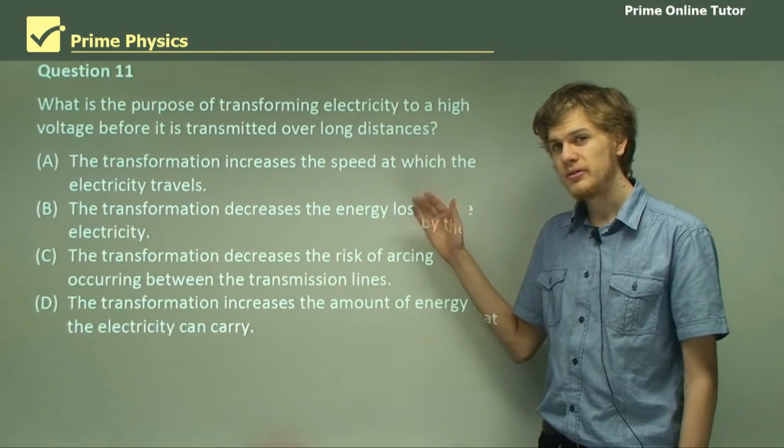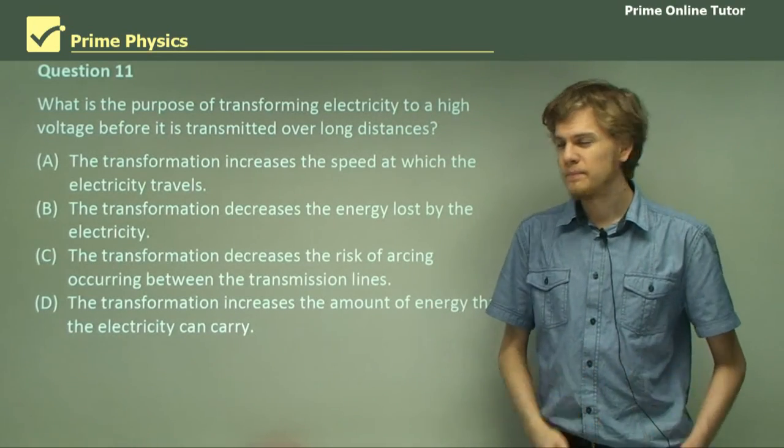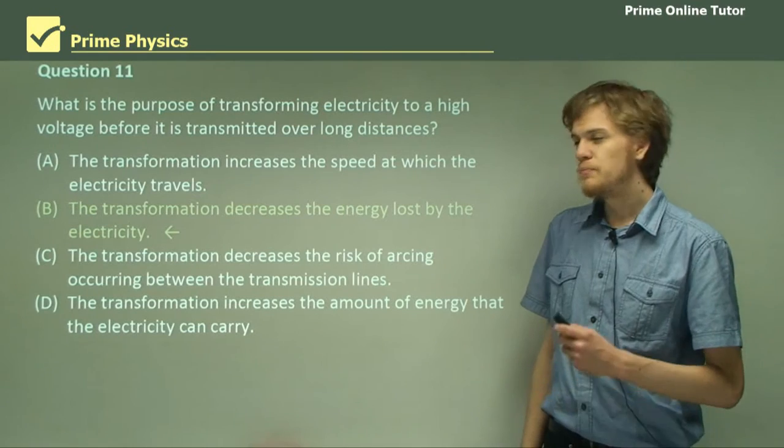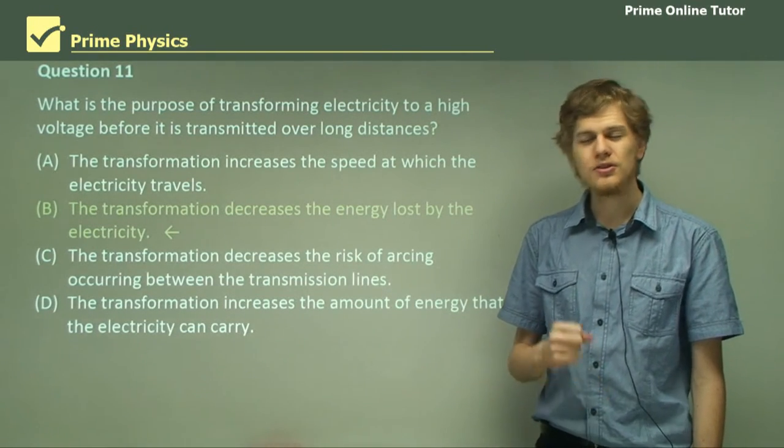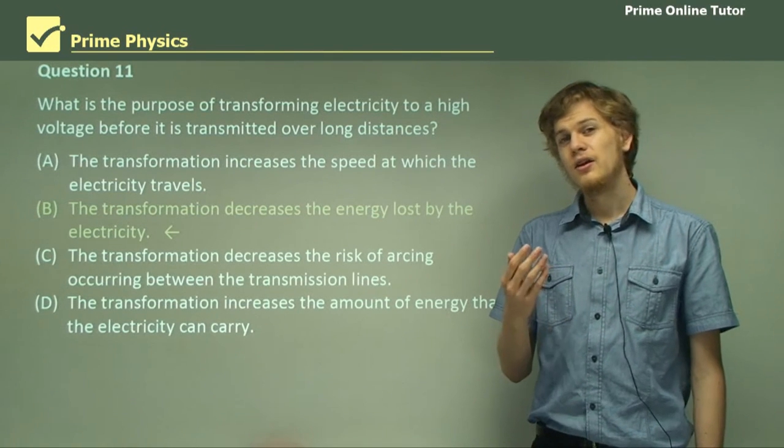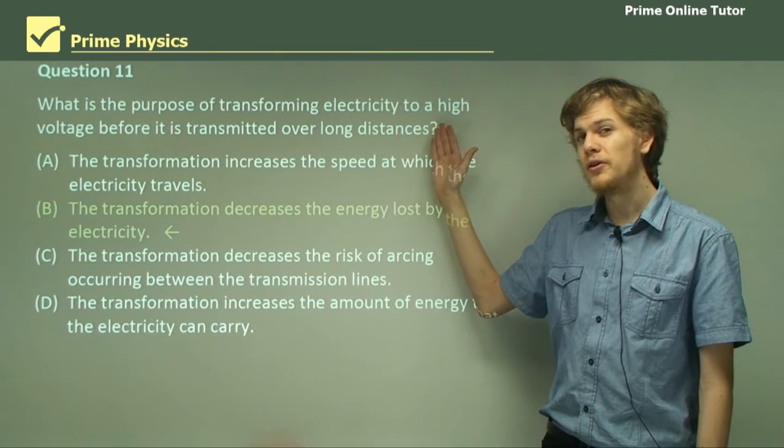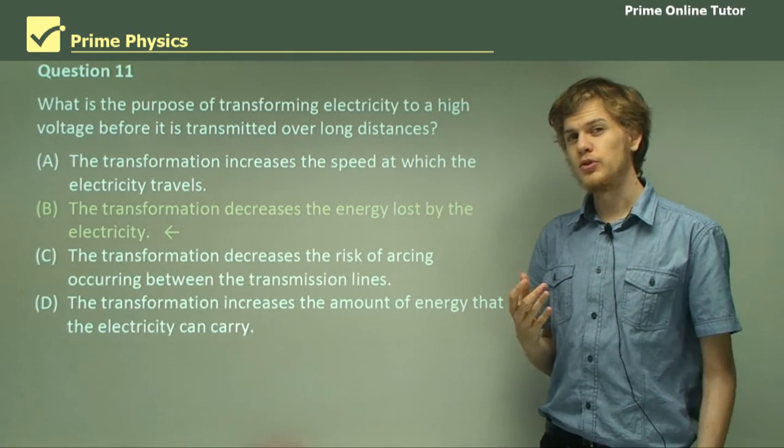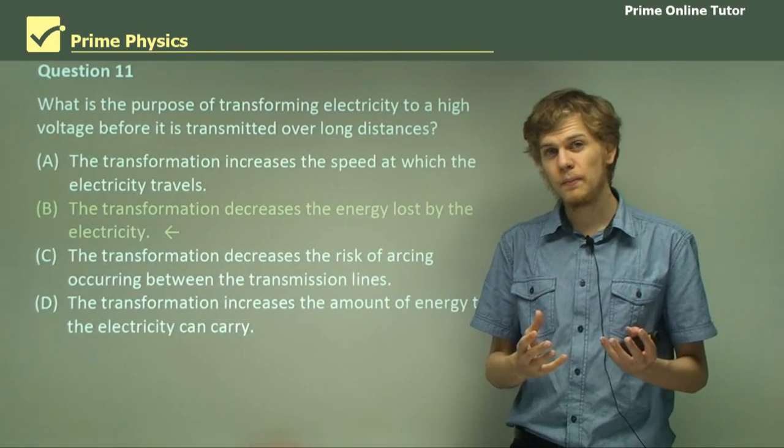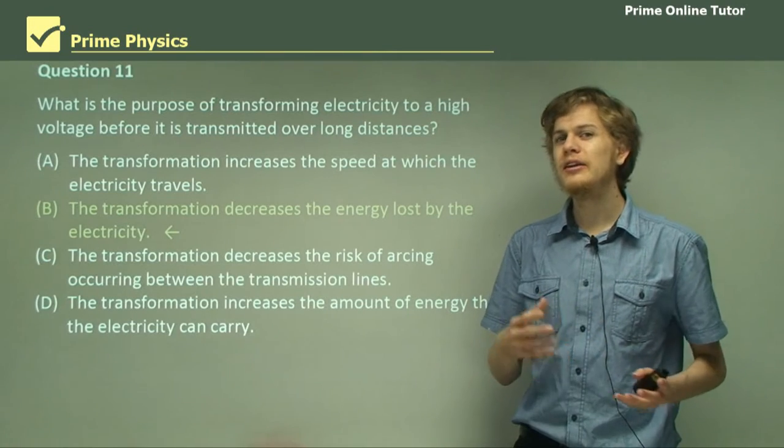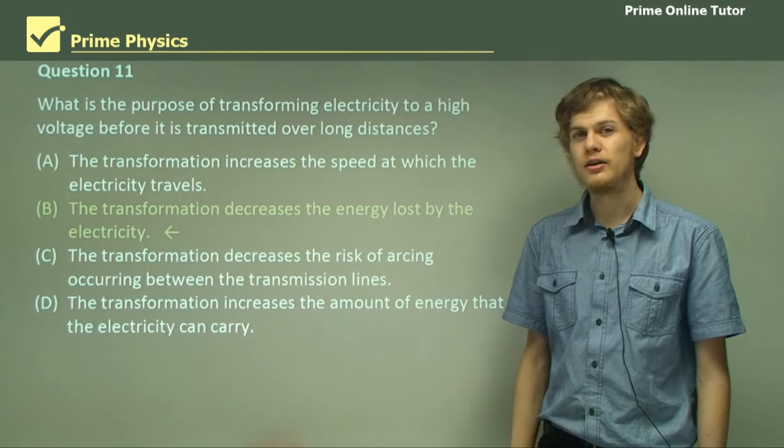The higher the potential difference, that is the larger the voltage, the higher the risk of arcing. The only option left is B. The transformation decreases the energy lost by the electricity. And this is the correct answer. The reason for this is because when we transform electricity to a very high voltage, it means we transform it to a very low current. If there's a very low current, it means we lose very little energy. And so this is why we transform it to that high voltage in the first place.